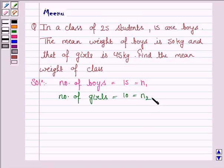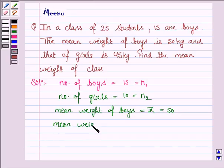Let this be N2. We are given that the mean weight of boys, let us denote it by X1 bar, is equal to 50 kg, and the mean weight of girls, X2 bar, is 45 kg.